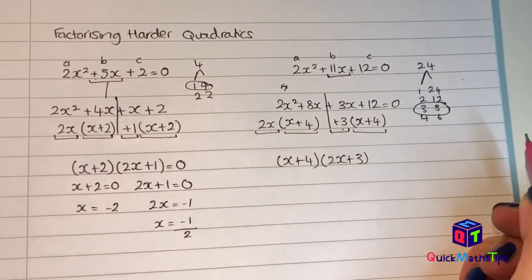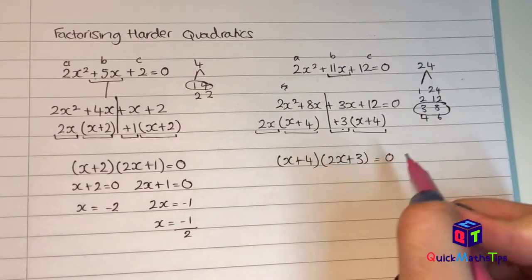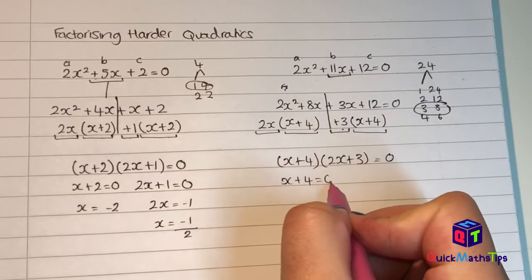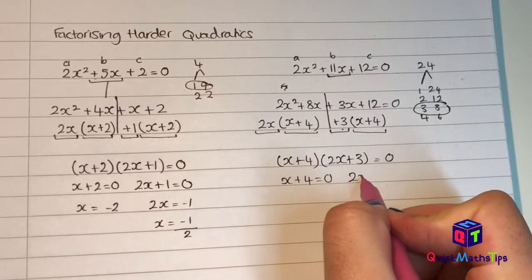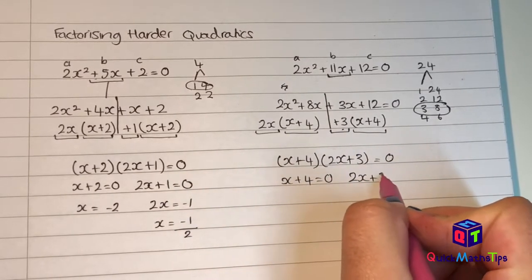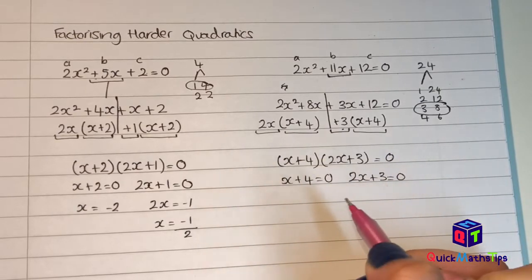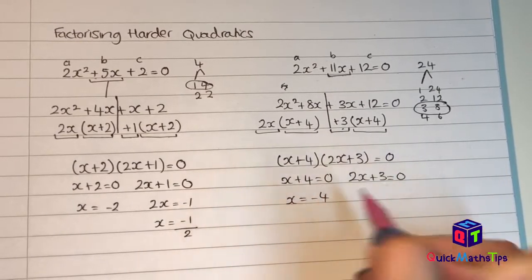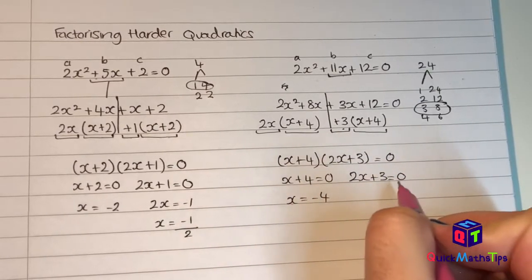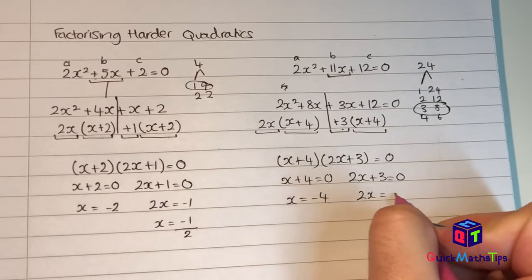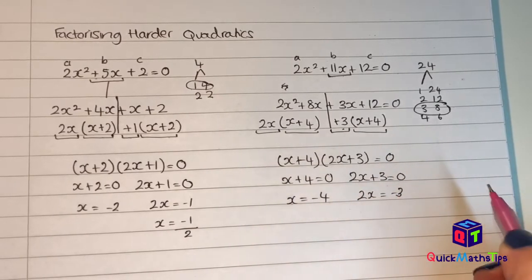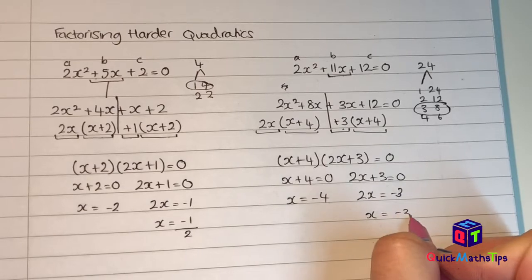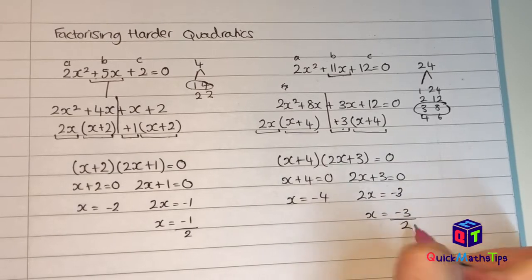If the question asks me to solve it, both brackets equal 0: x + 4 = 0 and 2x + 3 = 0. Subtracting 4 gives x = −4. Subtracting 3 gives 2x = −3, and dividing by 2 gives x = −3/2.